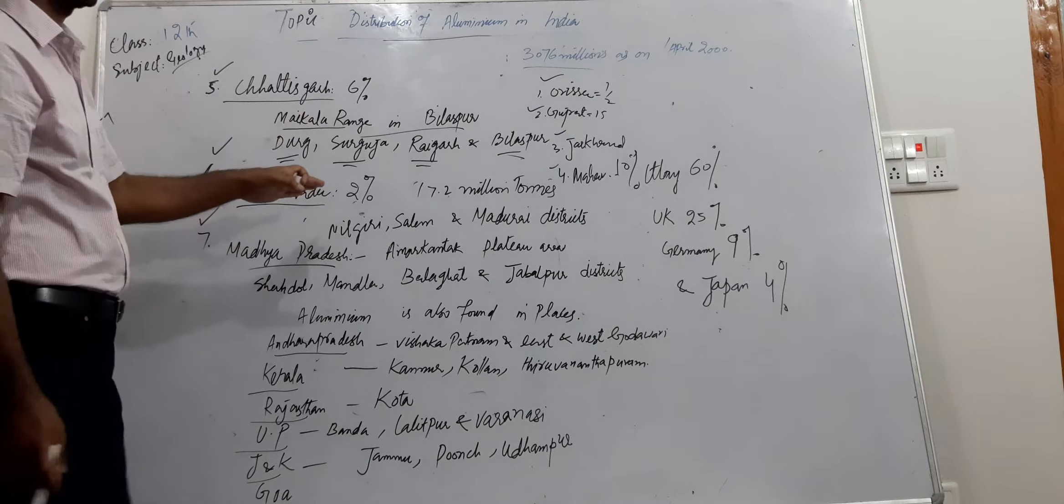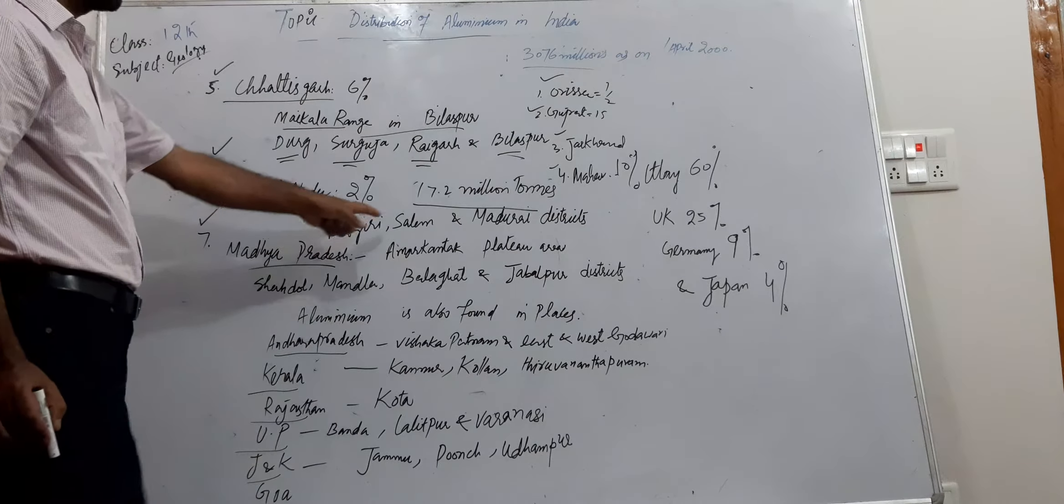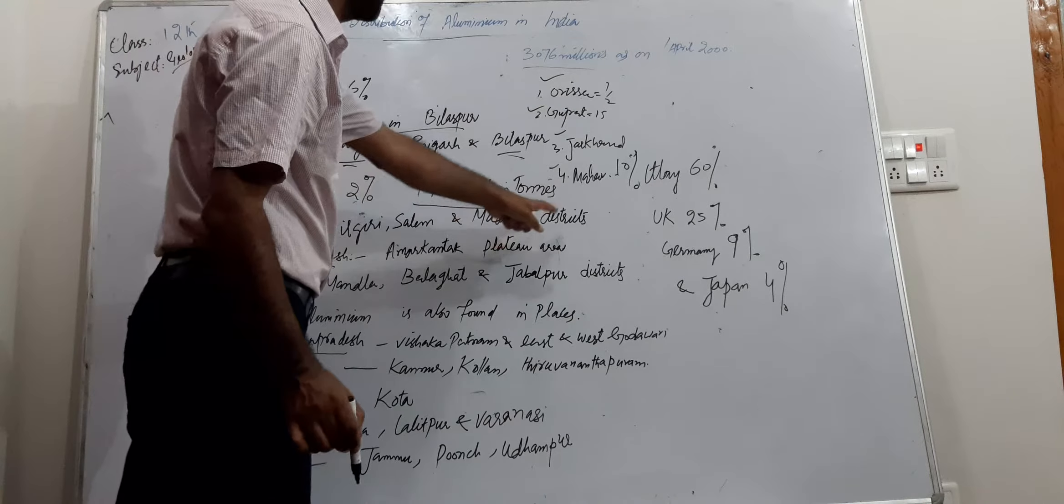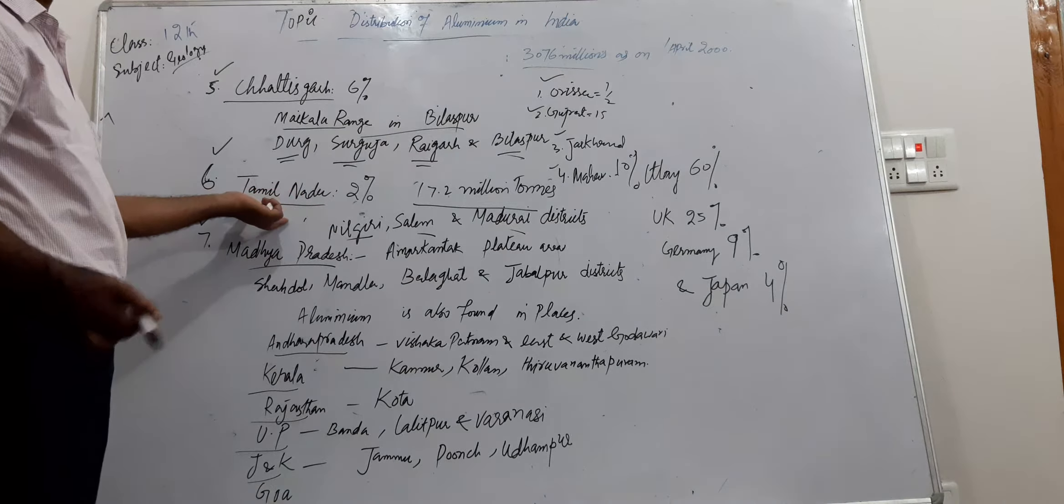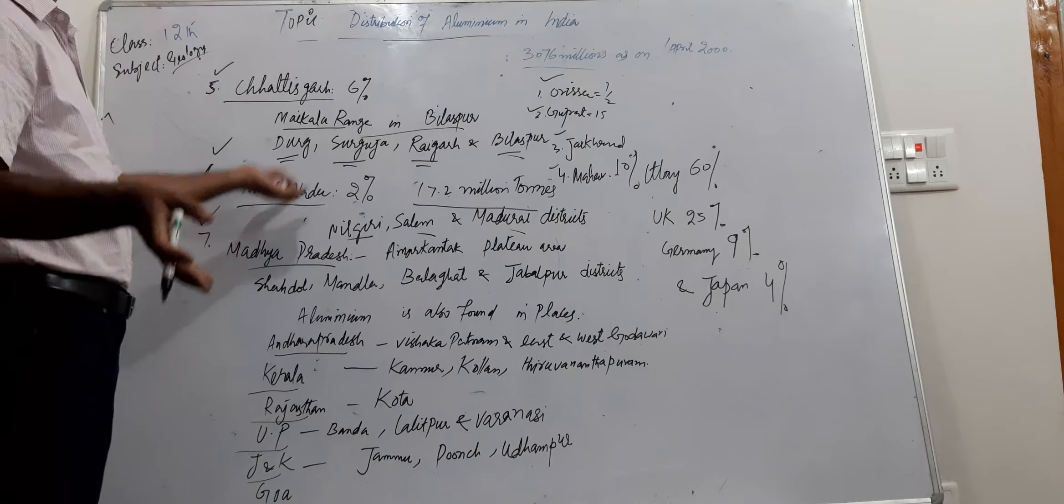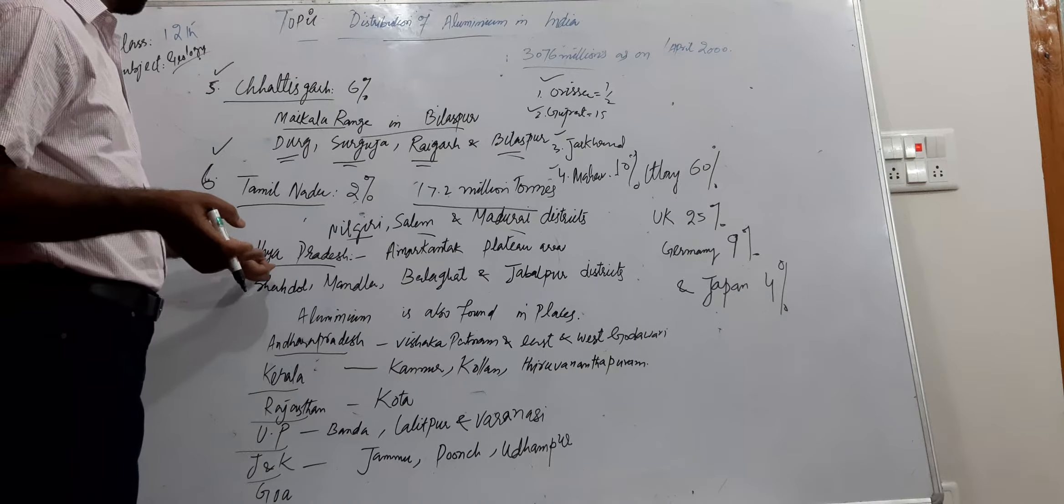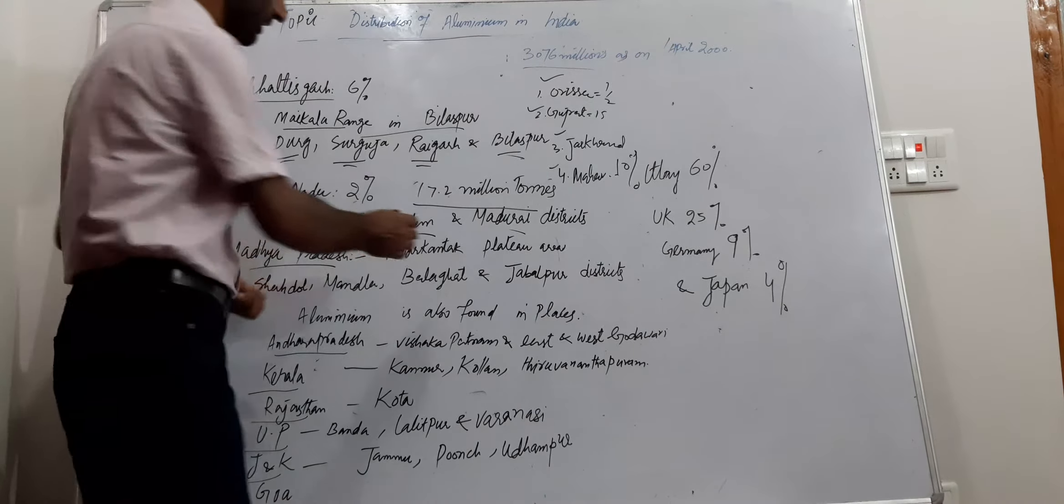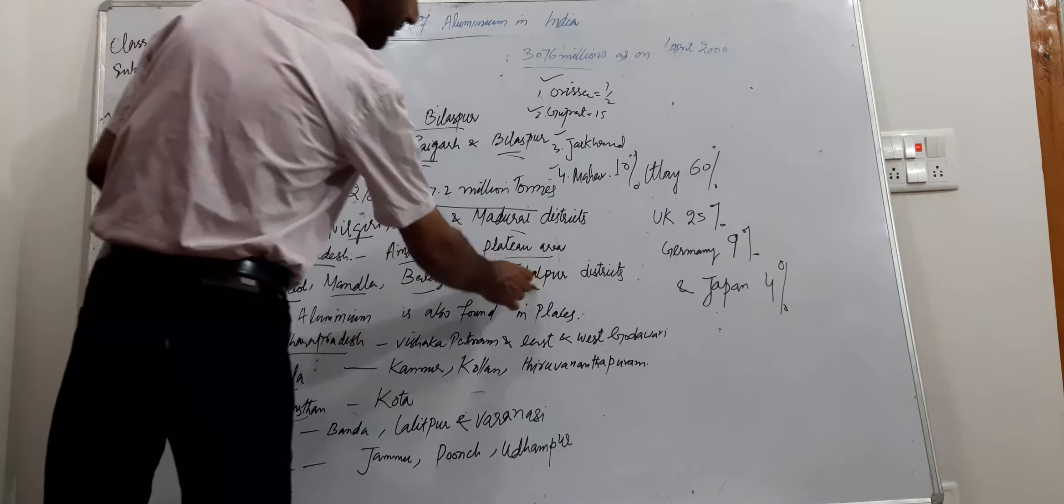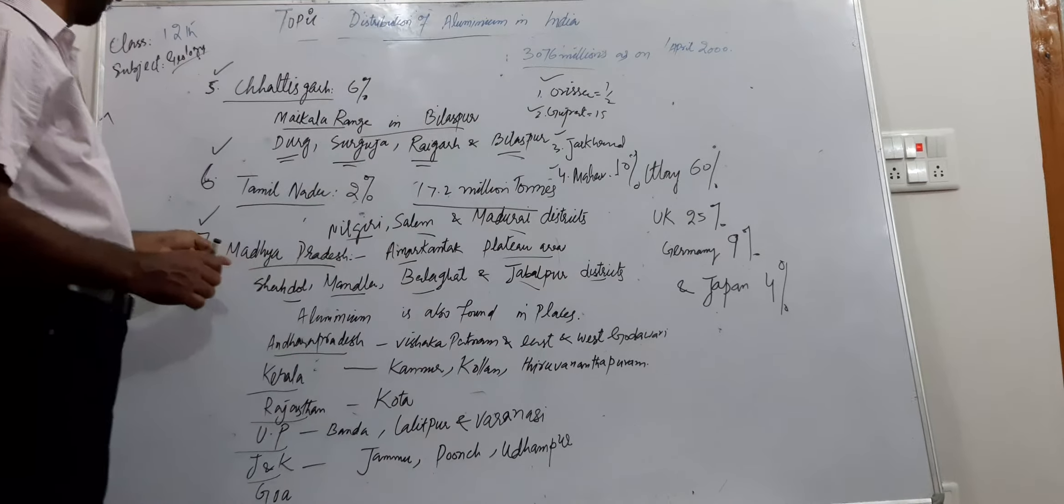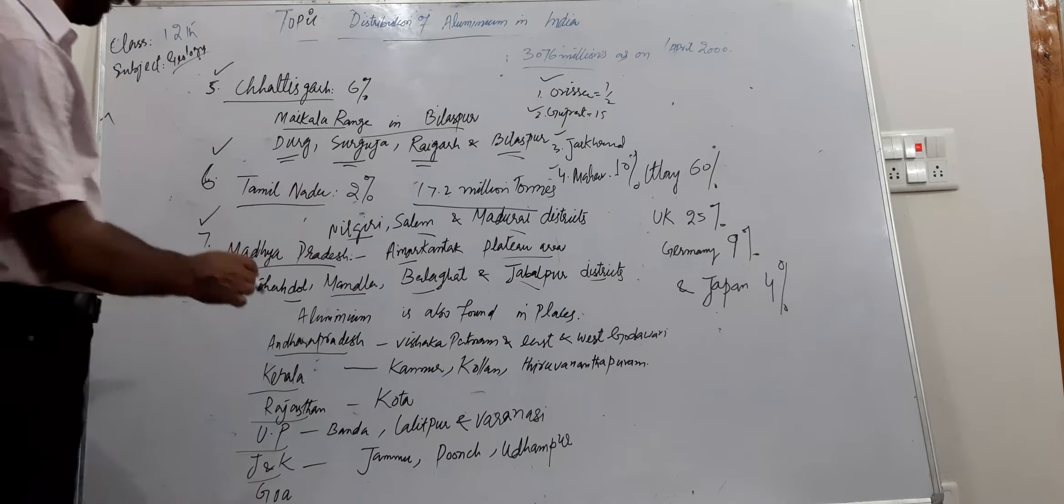Then serial number six, Tamil Nadu which contributes 2 percent and the overall reserve is 17.2 million tons. The districts are Nilgiri, Salem, Madurai which contribute this 2 percent in the state of Tamil Nadu. Madhya Pradesh: Amarkantak, Katni, Shahdol, Mandla, Balaghat, Jabalpur districts also contribute and aluminum is also found in these places.